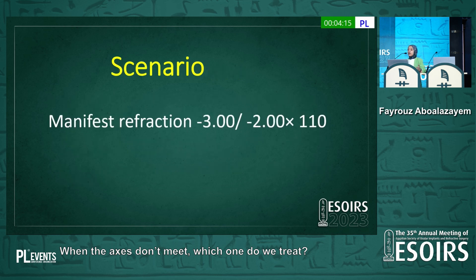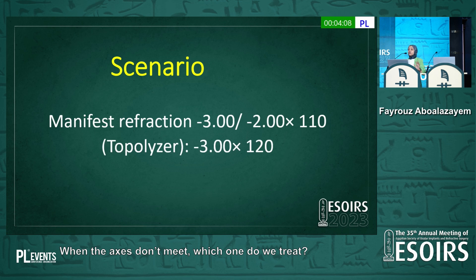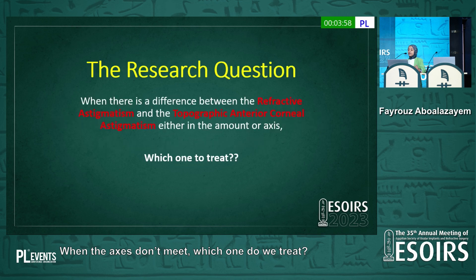But in a scenario like this, if a patient had a refraction of minus three, minus two at axis 110, and the topolizer found that they have a cylinder of minus three at a different axis — which amount and which axis are you going to treat? And this was our research question.